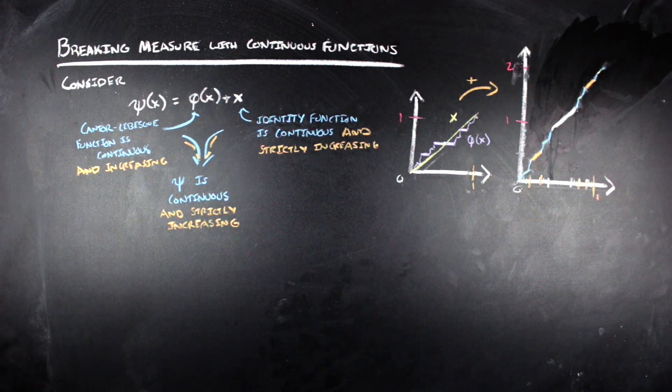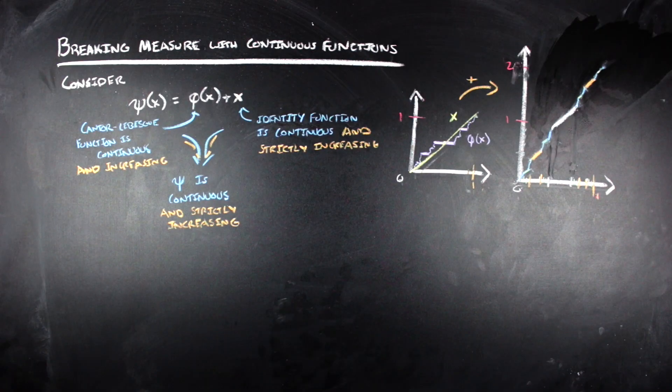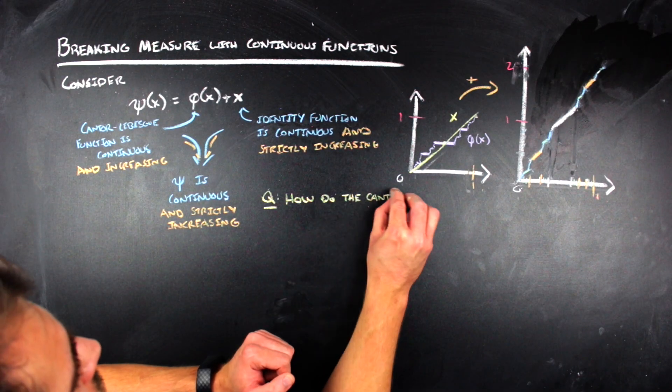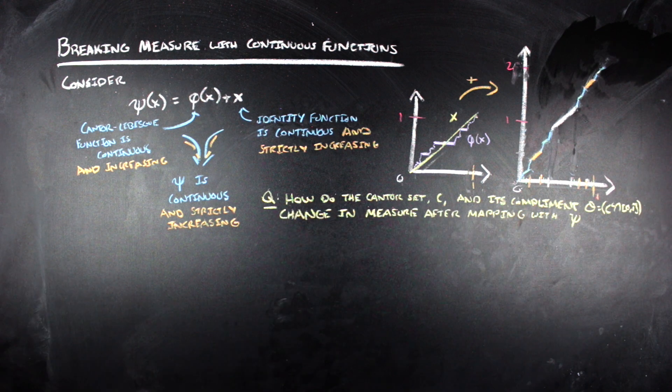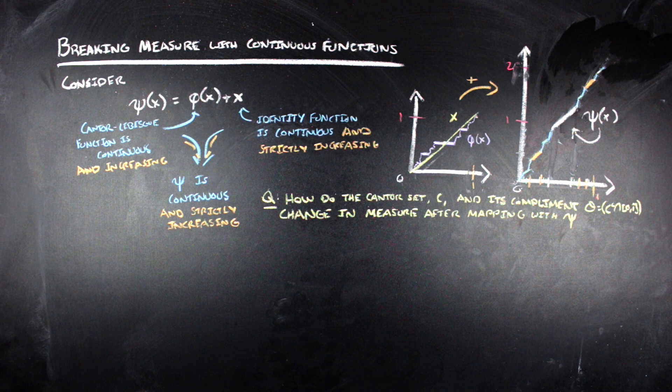And it goes from the closed interval from 0 to 1 to the closed interval from 0 to 2. So we can ask the question, how does psi and the open sets that are removed during the construction, how does the Cantor set and its complement change in measure after mapping with psi?